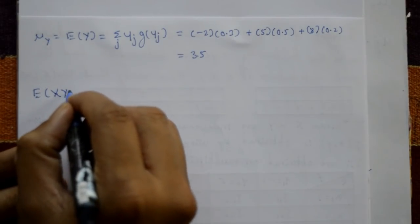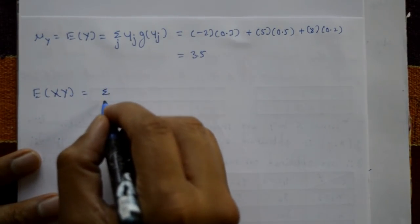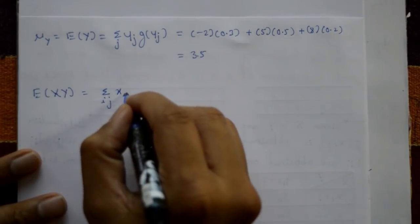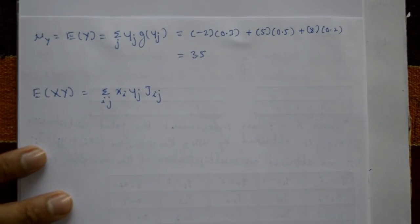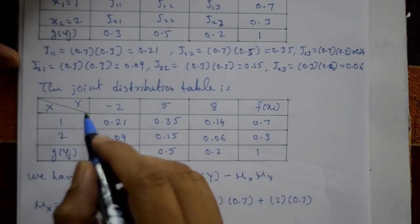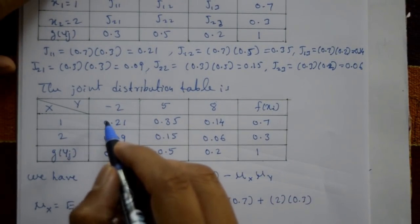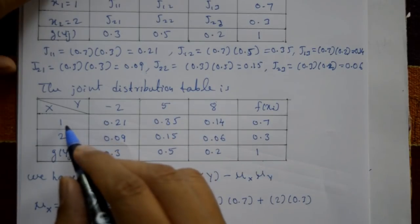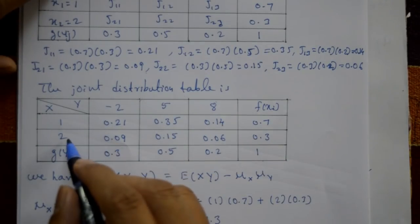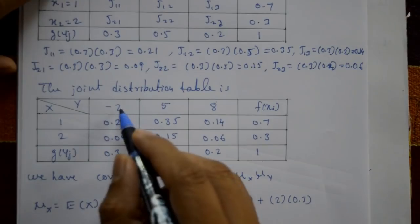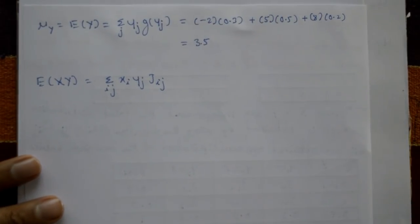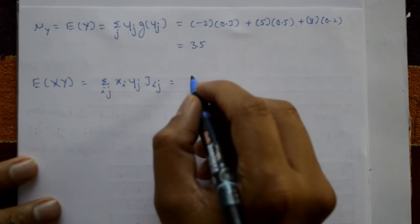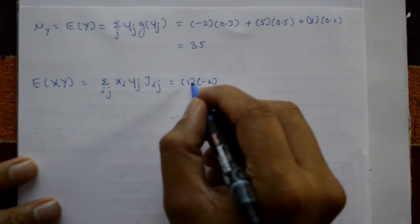Next, compute the expectation of XY: summation over i and j of xi × yj × j(i,j). The terms are: x1·y1·j11, x1·y2·j12, x1·y3·j13, x2·y1·j21, x2·y2·j22, and x2·y3·j23.